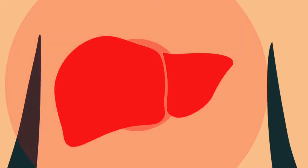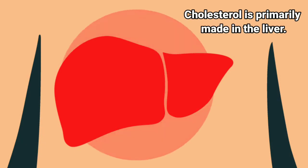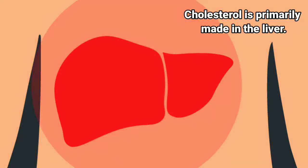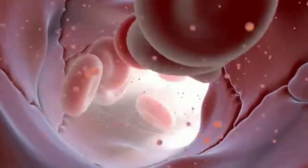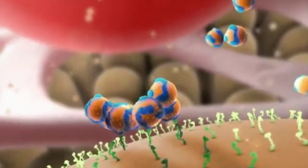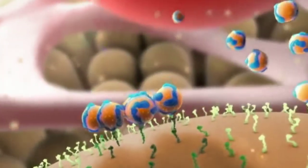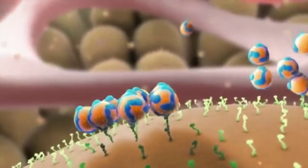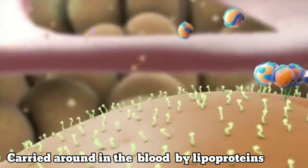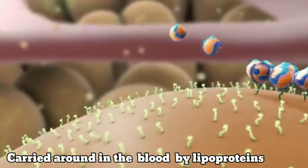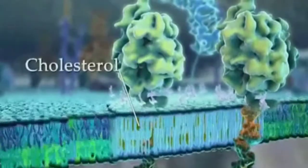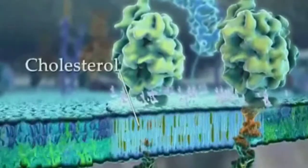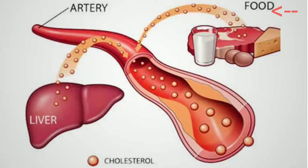Your body makes cholesterol primarily in the liver, but it can also be made by other cells in the body. It is carried around in the blood by little carriers called lipoproteins. We need small amounts of blood cholesterol because the body uses it to build the structure of cell membranes.